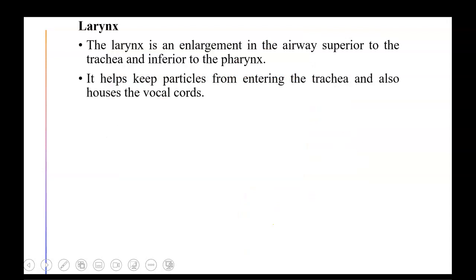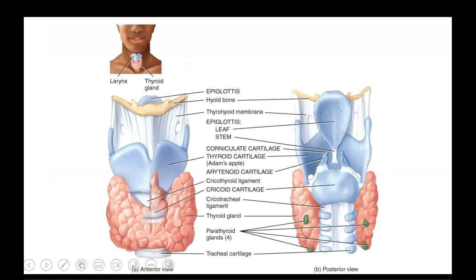The larynx is an enlargement of the airway superior to the trachea and inferior to the pharynx. It helps keep particles from entering the trachea and houses the vocal cords, which is why the larynx is often called the voice box. The epiglottis covers the opening called the glottis.